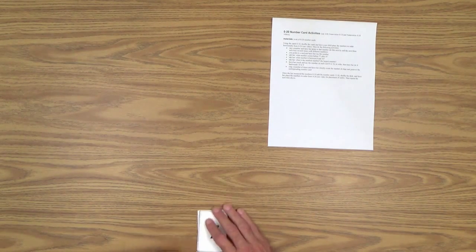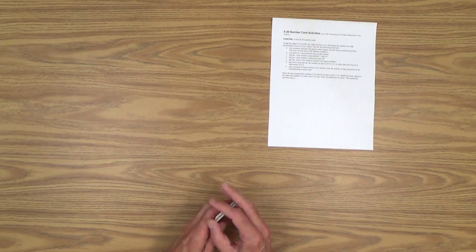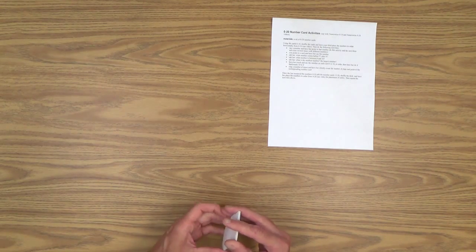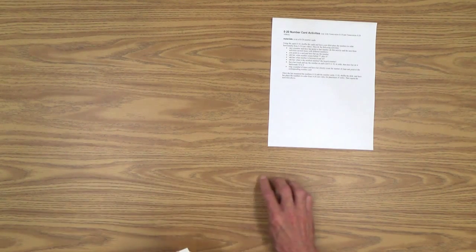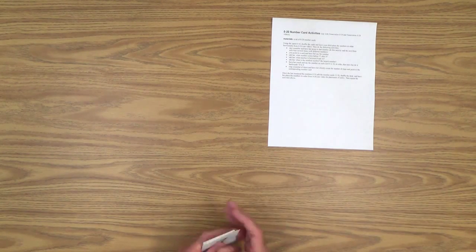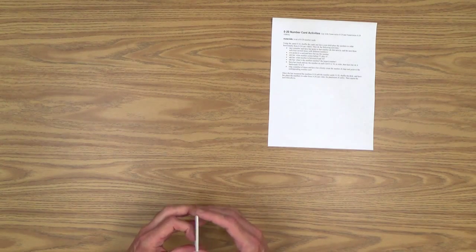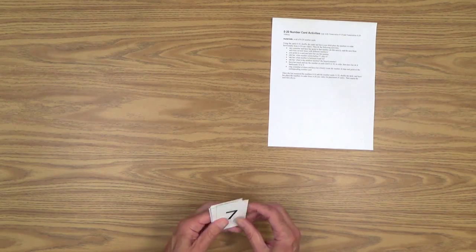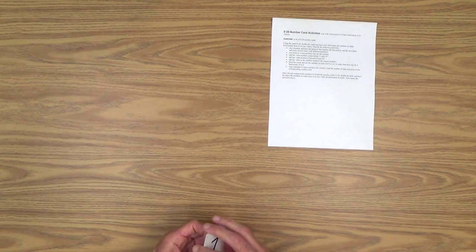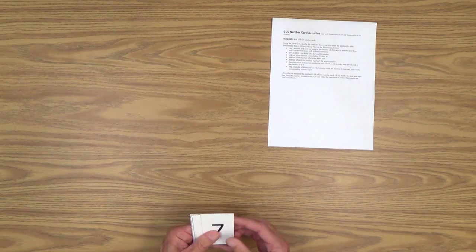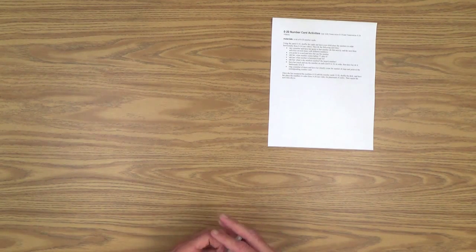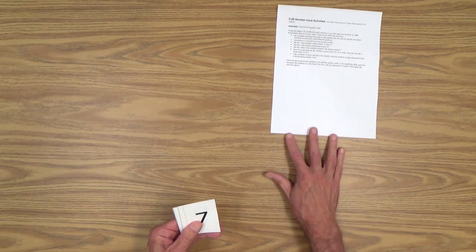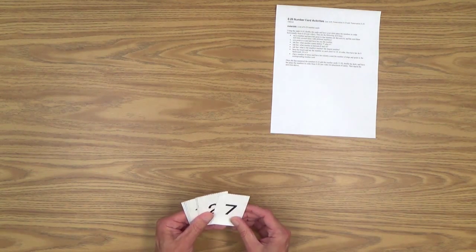We'll also be working with the printable sheet called zero to 20 number card activities. So the first thing you want to do is shuffle up the deck of cards, and from there you can have your child lay out the cards zero through 10 in a nice line. And you might want to model that activity first.